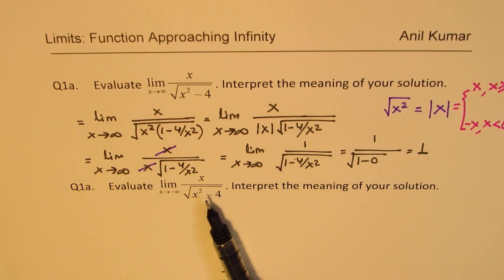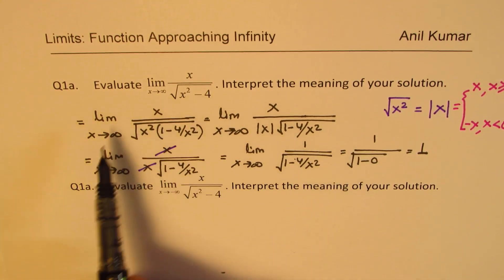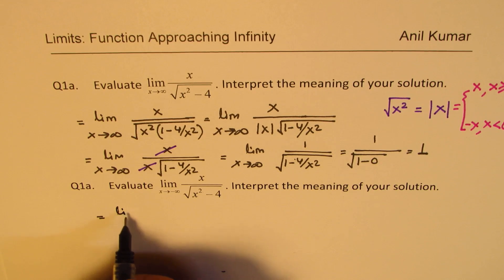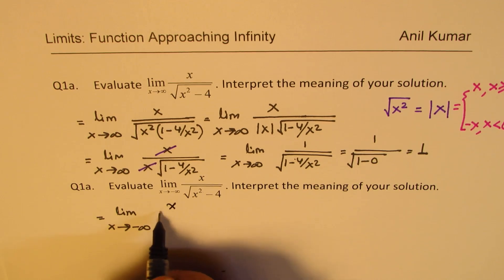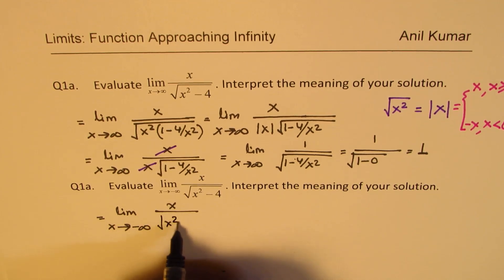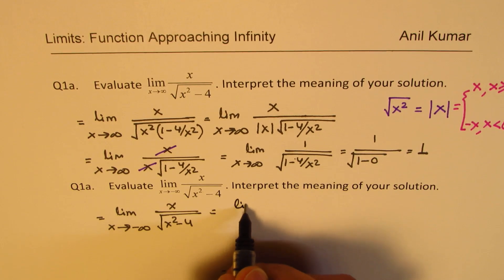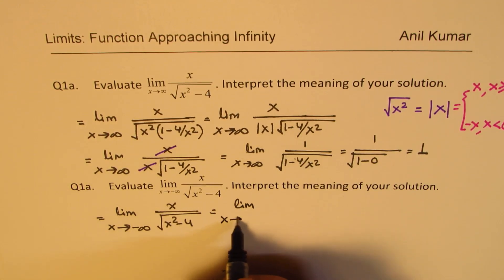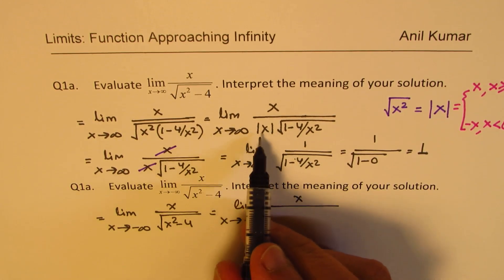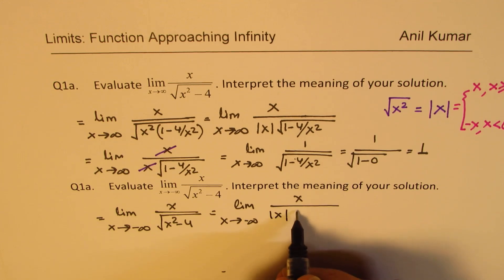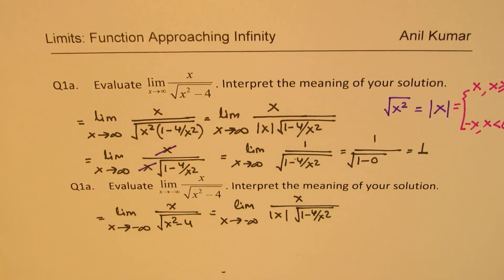Now let us do the second question. You know the strategy — why don't you pause the video, answer the question, and then check with my solution? We do exactly the same steps. The question now is x approaches negative infinity instead of positive infinity. The only difference will be when we reach the step with the absolute value of x: x over absolute value of x times square root of 1 minus 4 over x squared.